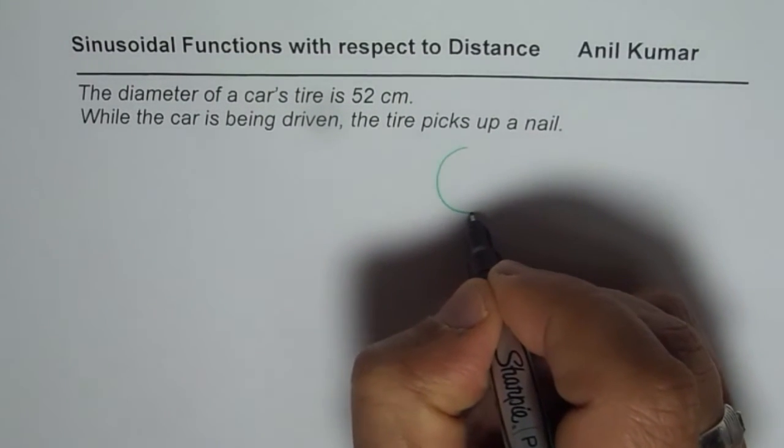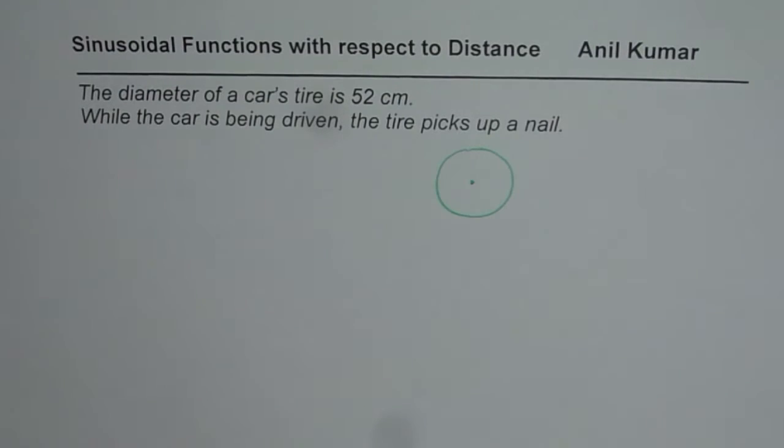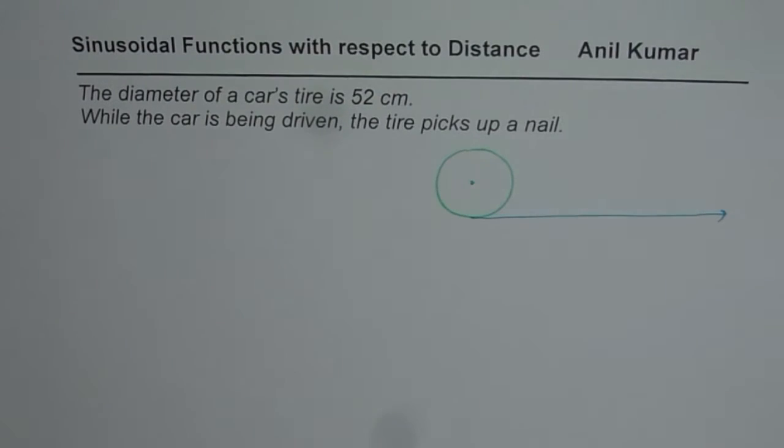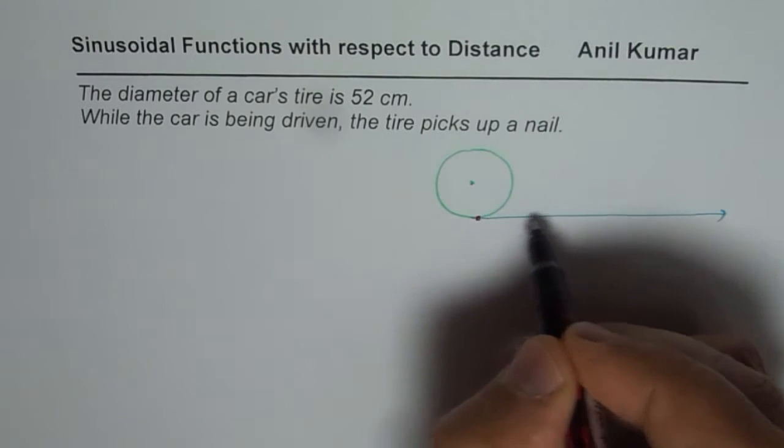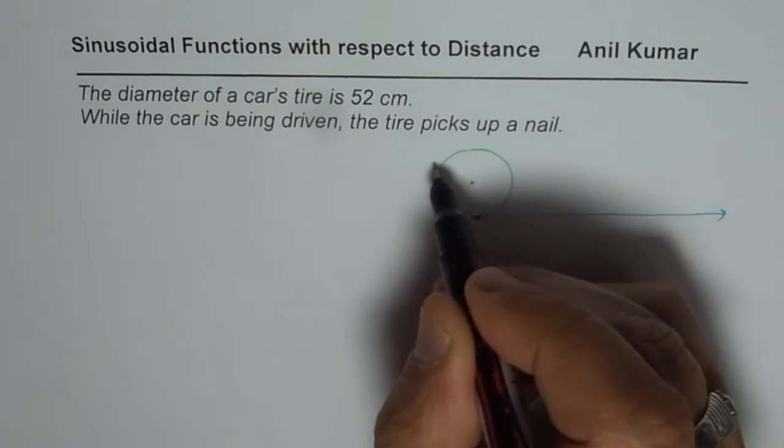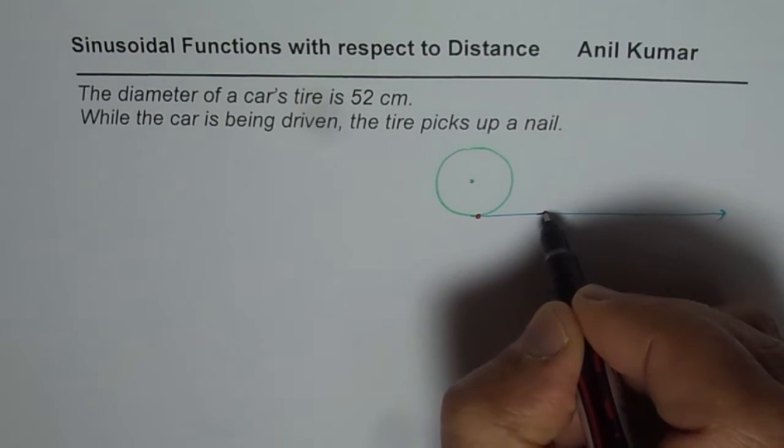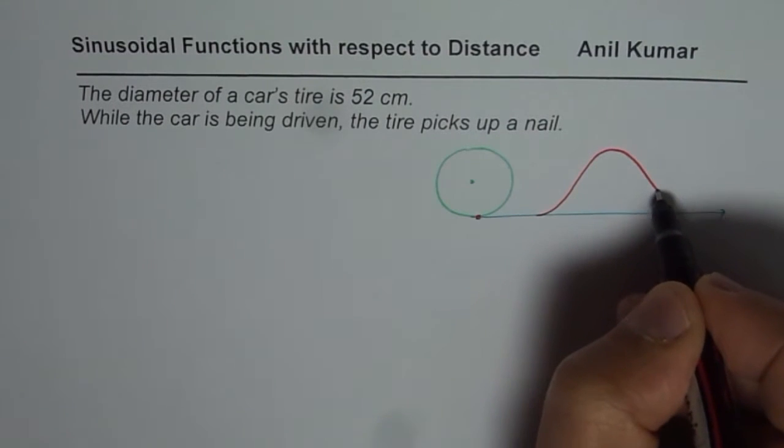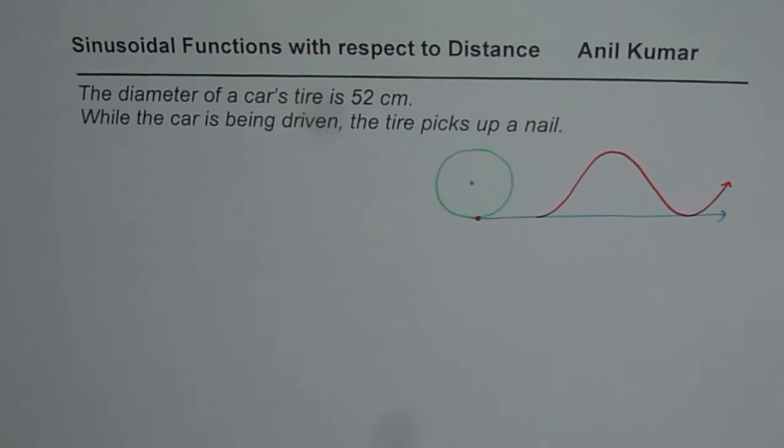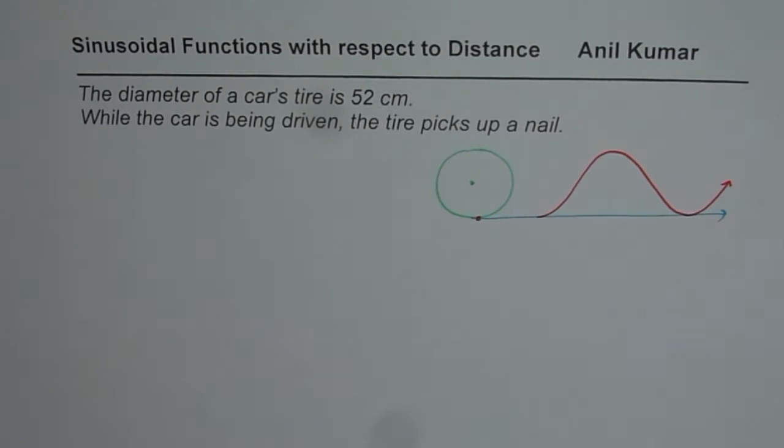Think like this. Here we have a tire of a car and it is travelling, moving in this direction. The car is actually moving. It picks up a nail at this position. As the car is driven, the nail moves upwards, and it completes one full circle and then again repeats the same motion. So it becomes a sinusoidal function. The nail's position will be like this, which is a sinusoidal function. In this video we will learn how to model this particular function.